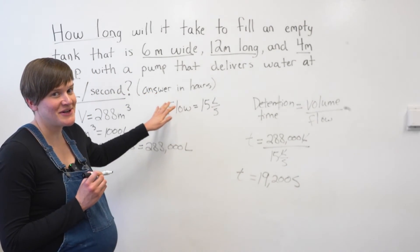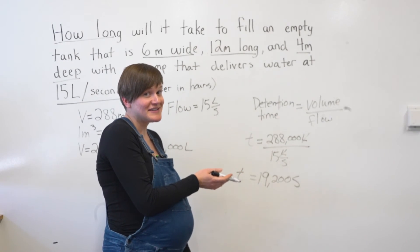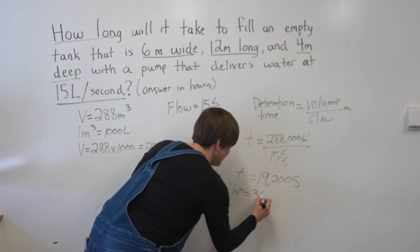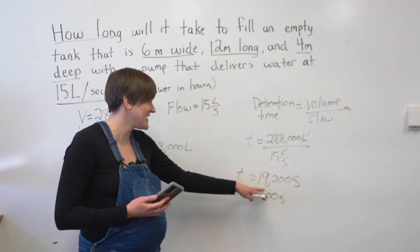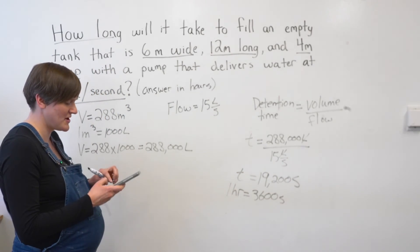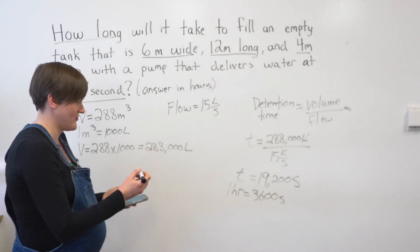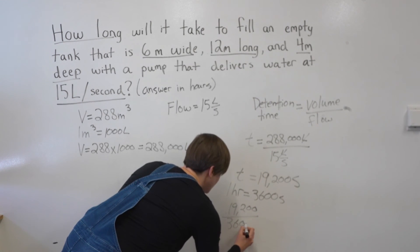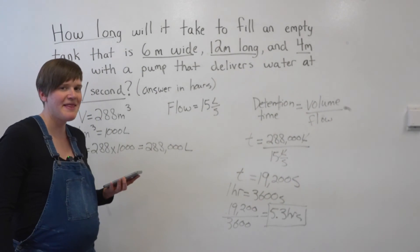But the question wants the answer in hours. How many seconds in an hour? 3,600 seconds. So one hour is 3,600 seconds, and I can take my answer in seconds and divide by 3,600. If you want more information on doing unit conversions, lots of other videos are available on that topic. So 19,200 divided by 3,600, I get 5.3 hours. And that is my final answer.